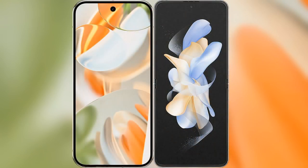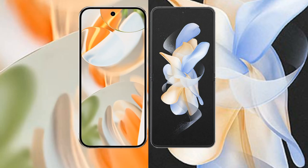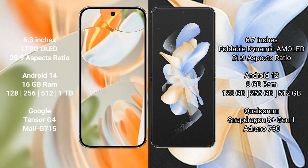We will compare the new Google Pixel 9 Pro with Samsung Galaxy Z Flip 4. Google Pixel 9 Pro features a 6.3-inch LTPO OLED display, starting price $26.9. Samsung Galaxy Z Flip 4 features a 6.7-inch foldable dynamic AMOLED display, starting price $21.9.